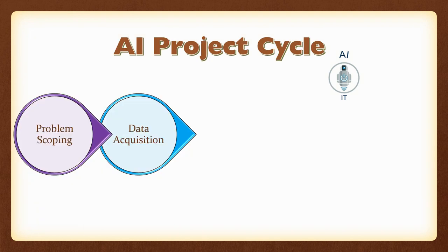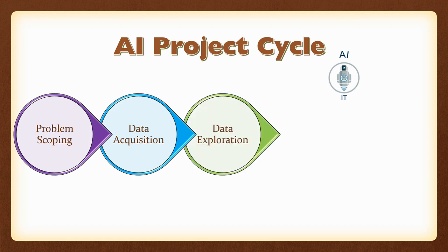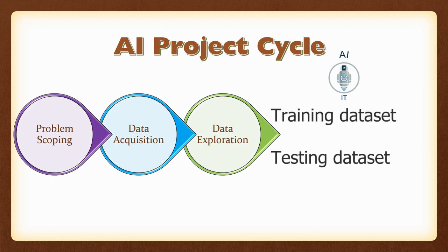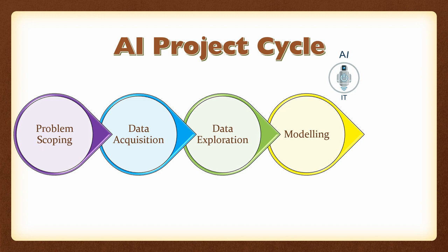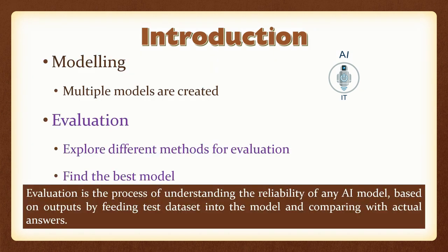We acquired data during the data acquisition stage, with which we tried to interpret patterns in the data exploration stage. We also learnt that we need to clean and pre-process it during the data exploration stage, and then divide the dataset into two parts: training dataset and testing dataset. The training dataset is what we used in the modeling stage, and the testing dataset is what we are going to use in the evaluation stage. We are checking the reliability of the model by feeding in the testing dataset and then comparing with the actual answers.